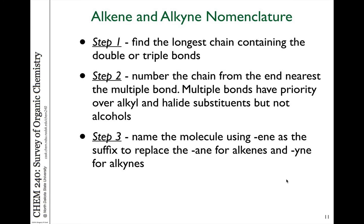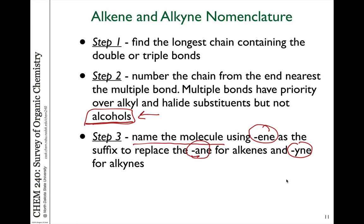These are the formal steps when you think about alkene and alkyne naming. Find the longest chain that contains all the double or triple bonds if possible — those take priority over anything else. Number the chain from the end nearest the multiple bond, regardless of where any other substituent is. Multiple bonds have priority over any other alkyl or halide substituents. The one exception is alcohols, because an alcohol is part of the parent name, just like -ene is part of the parent name — we'll talk about that in later chapters. Then name the molecule using -ene at the end instead of -ane, and if we have alkynes, that's -yne instead of -ane.